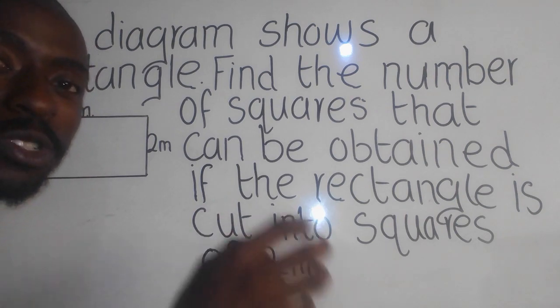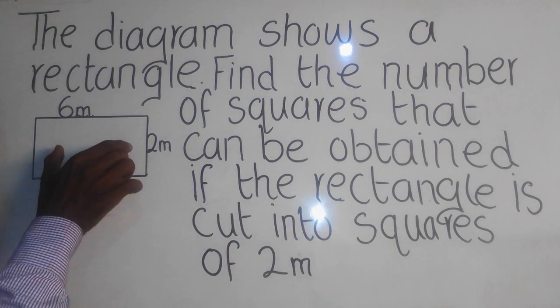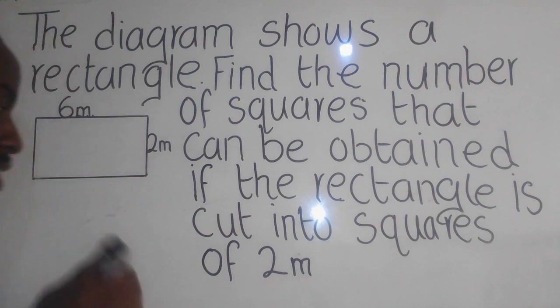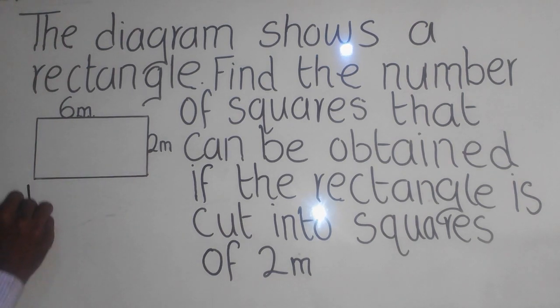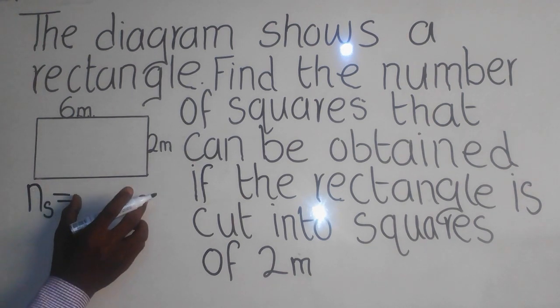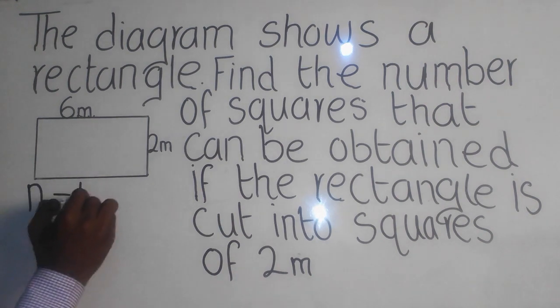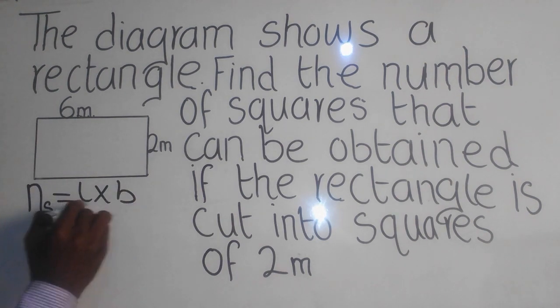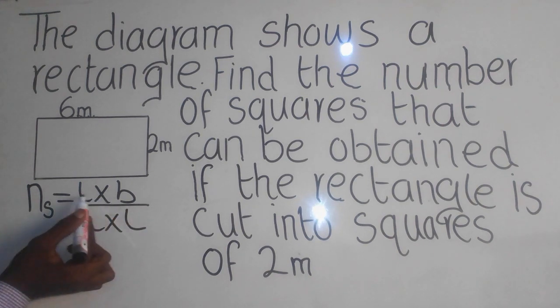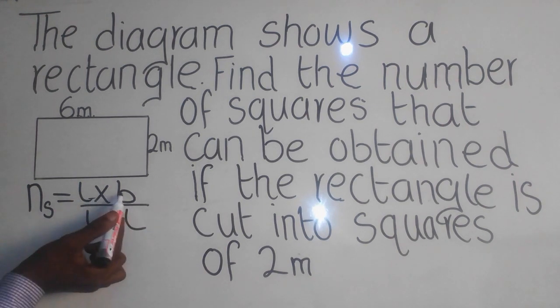Now the formula which we're going to use is this one. You say number of square shapes is equal to area of the rectangle, which is L times B, over area of the square. So this one on top is area of the rectangle, this one down is area of the square.